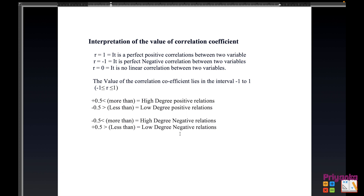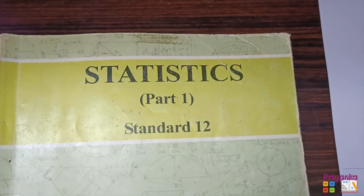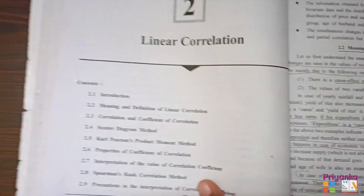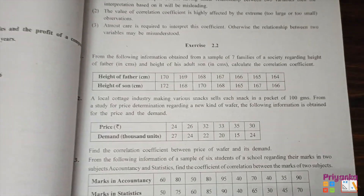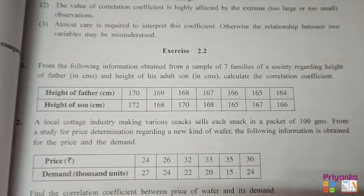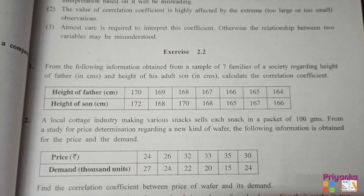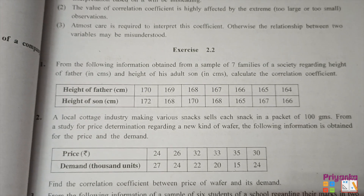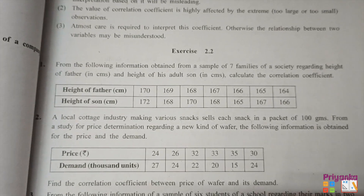We will continue with the solution of Exercise 2.2. From Statistics Part 1, Standard 12, Chapter 2 — Linear Correlation. In question one, from the following information obtained from a sample of seven families regarding height of a father and height of an adult son, we are asked to calculate the correlation coefficient.